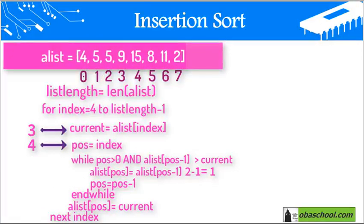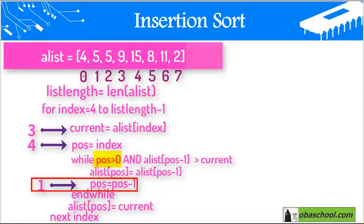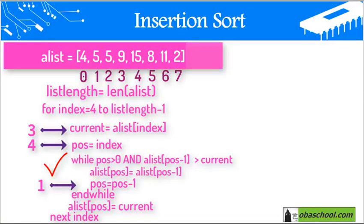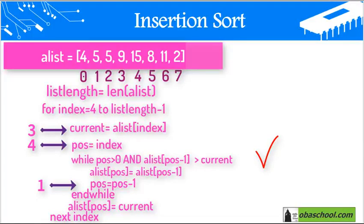Then we continue to pause equal pause minus 1, that is 2 minus 1 equals 1. While pause (which is 1) is greater than 0, this condition is true. And list[pause-1], that is 1 minus 1 = index 0, we check if that value is greater than the current value of 3. This condition is true, so we enter the while loop again, since 1 minus 1 gives us index 0.